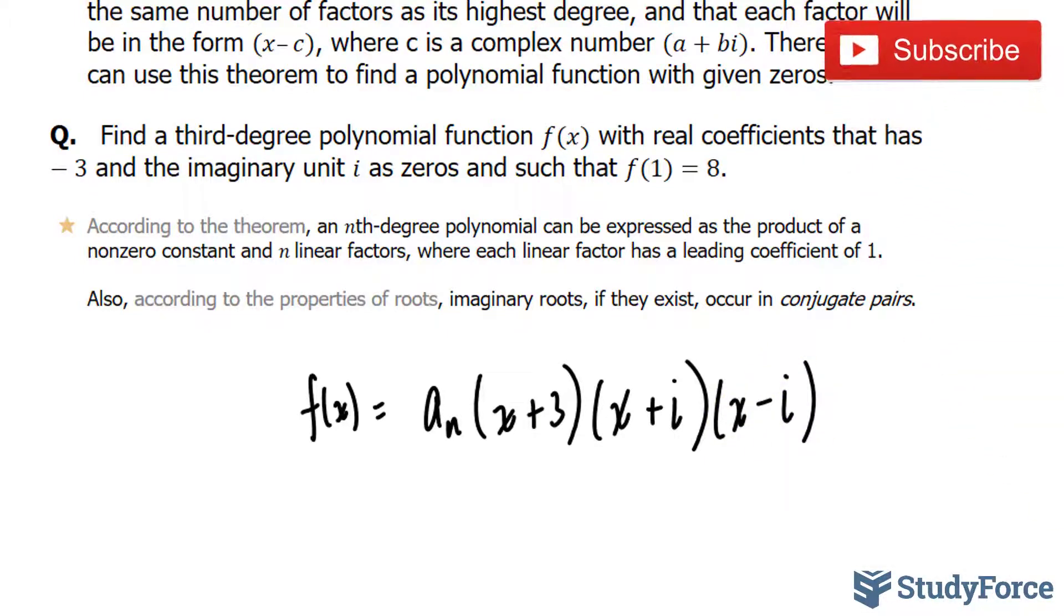Before we move on, notice that here we have three factors, and that's because it's a third-degree function. If it were a fourth-degree, we would see four terms, and so on. And this 3, i, and -i represent c1, c2, and c3.